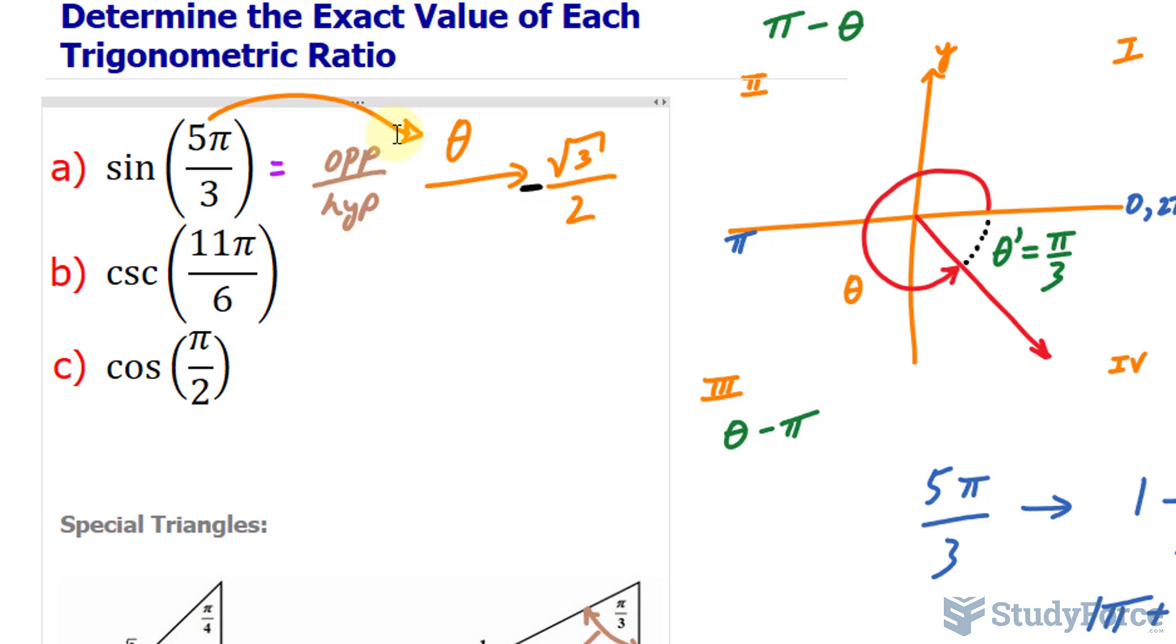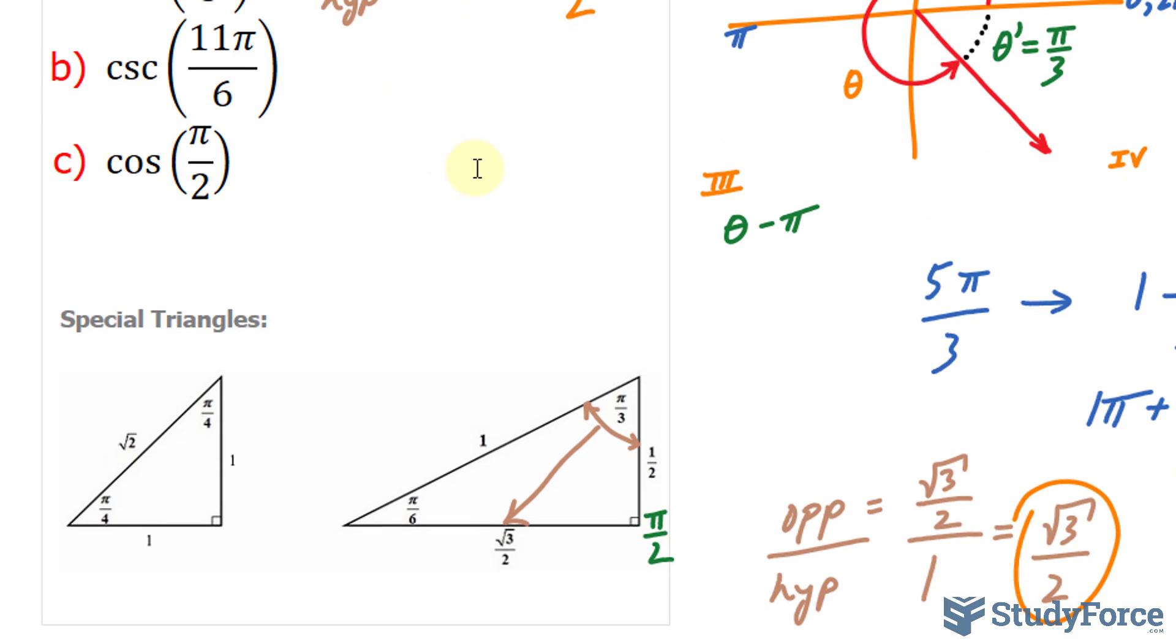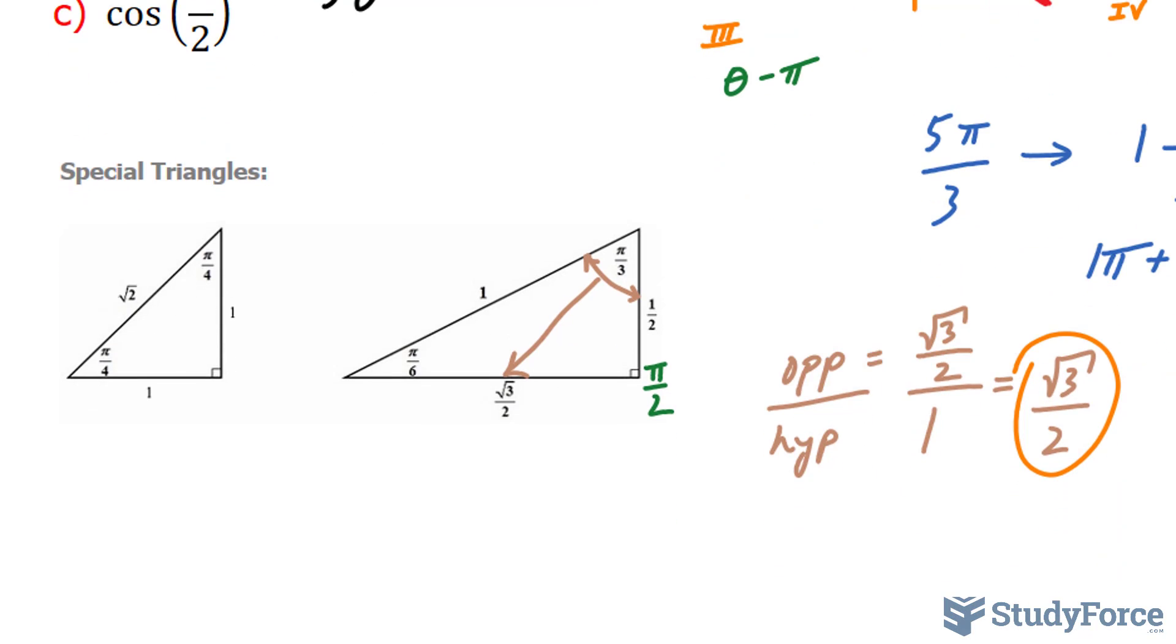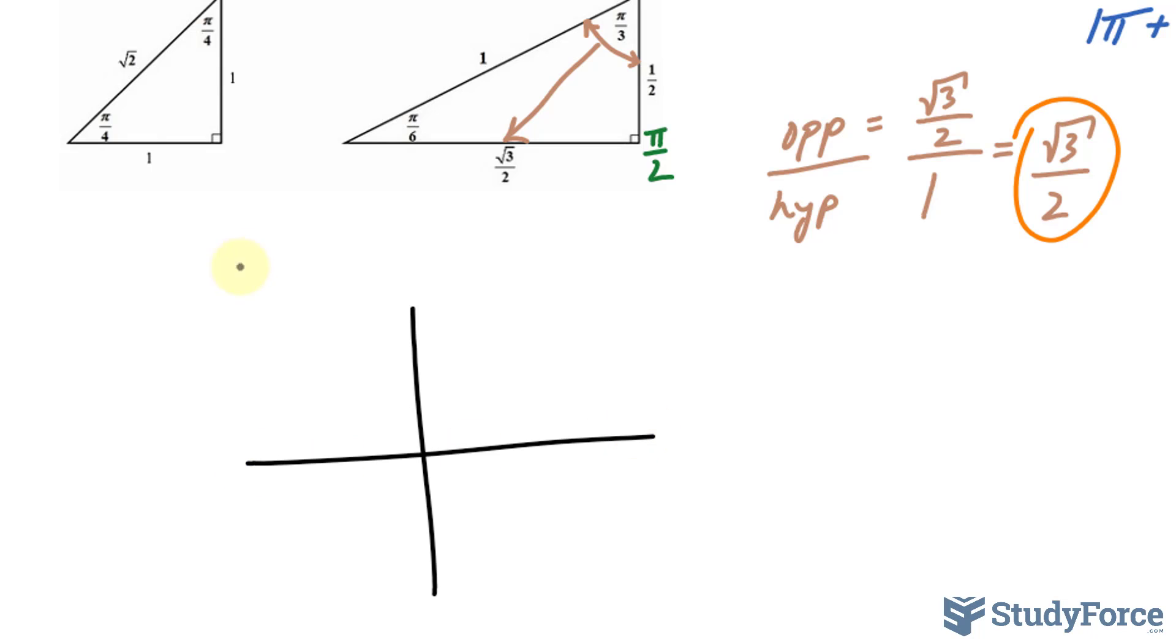Let's move on to the next question. The next question is cosecant at an angle of 11π over 6. So the very first thing that we want to know is where is 11π over 6 in this polar plane? Is it in the first, second, third, or fourth quadrant? And because the numerator, 11, is greater than the denominator, I can make this into a mixed fraction.